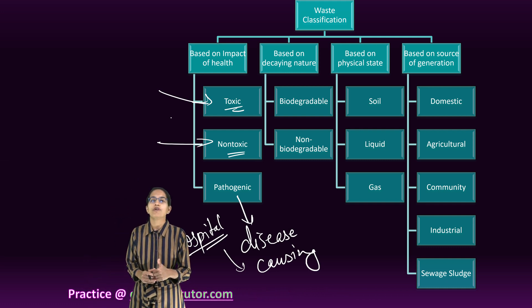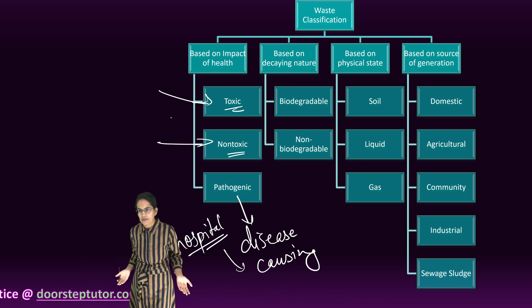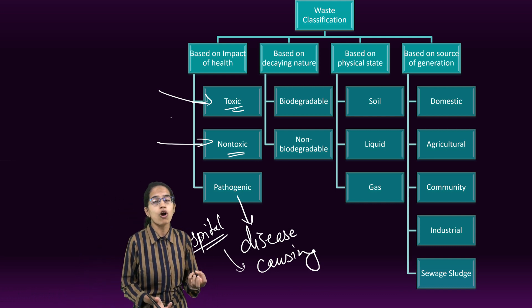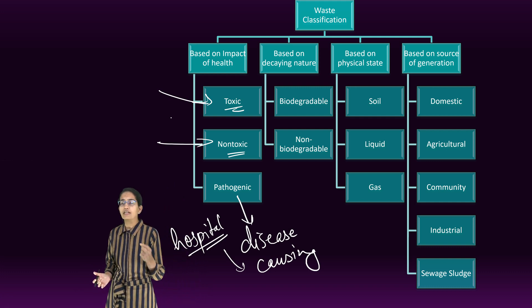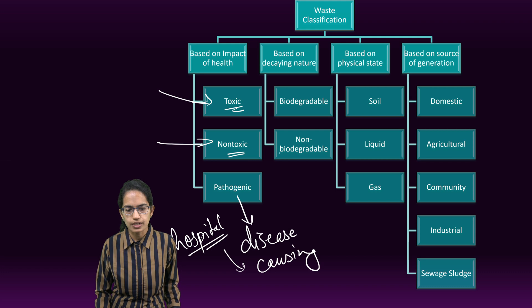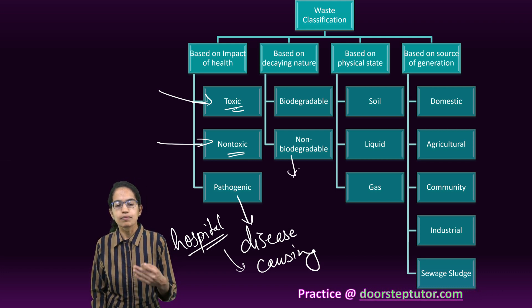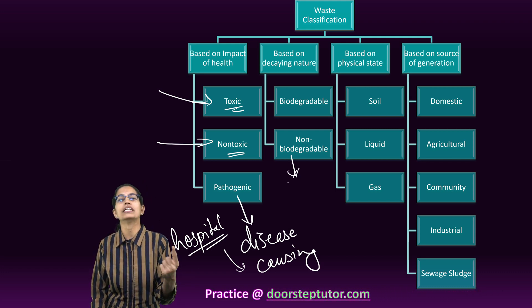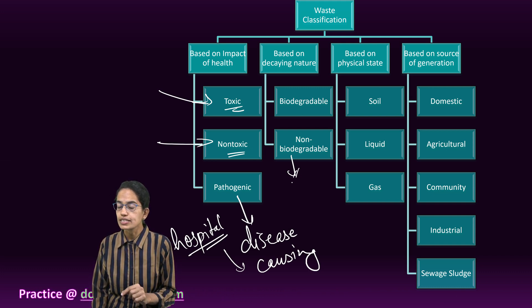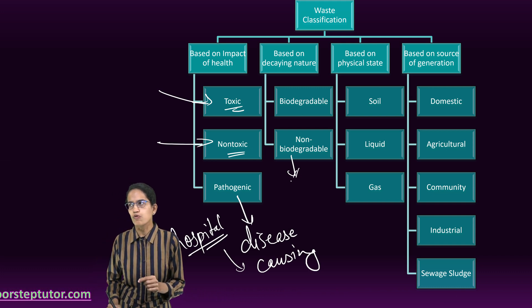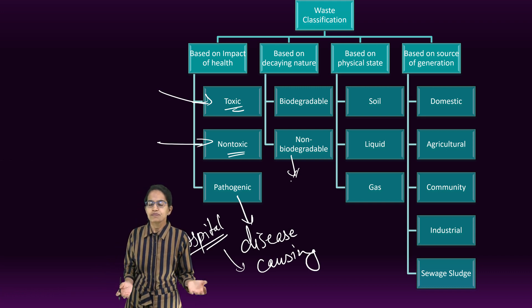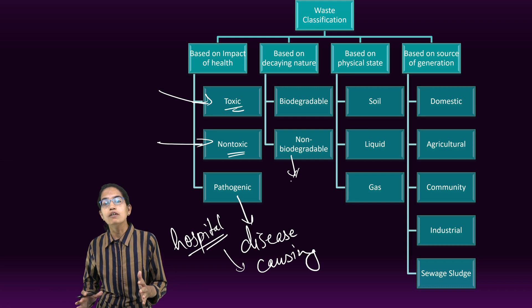What would be an example of non-biodegradable? Anything which is generated from a plastic or polymer base is an example of non-biodegradable. It cannot be degraded back — it can be recycled, but it is not degradable. Similarly, industrial waste mainly in the form of arsenic and lead are non-biodegradable.